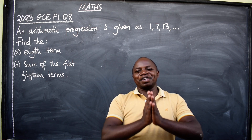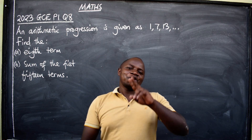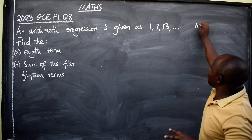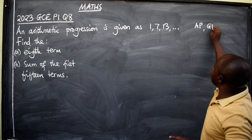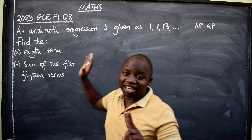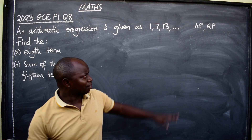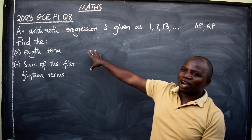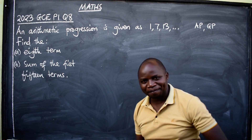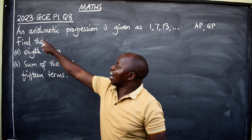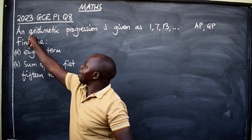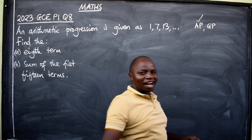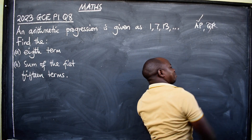Under the topic sequences and series, we look at two types of sequences: AP and GP. AP stands for arithmetic progression, GP stands for geometric progression. What type of sequence is given here — is it AP or GP? It is arithmetic progression, AP. So we know we are dealing with the AP and not GP.